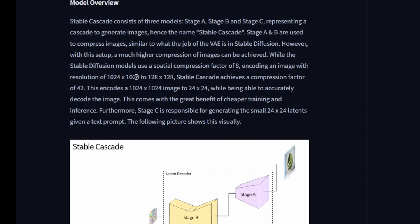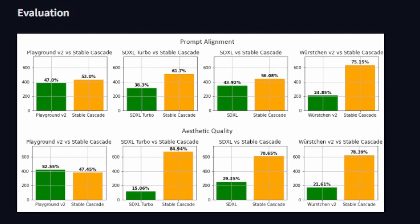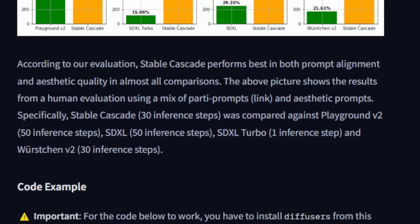Both lower-end and high-end GPU graphics cards benefit from faster image generation. Looking at the evaluations, they compare prompt alignment and aesthetic quality against Playground v2, SDXL Turbo, SDXL, and Würzchen v2. In prompt alignment, Stable Cascade surpasses all those older models currently on the market. In aesthetic quality, Playground v2 scores slightly higher than Stable Cascade, but it's still way better than the other diffusion models — based on their benchmarking results.